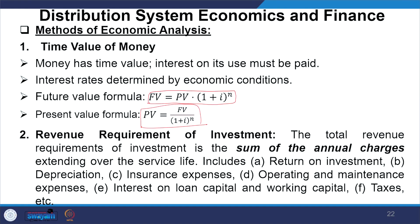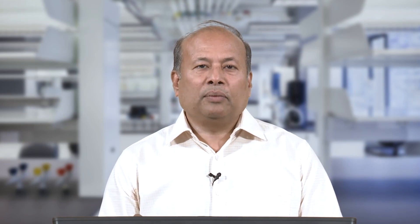The total revenue requirement of an investment is the sum of annual charges over the service life: return on investment, depreciation cost, insurance expenses, operating and maintenance expenses, interest on loan capital and working capital, taxes and other costs. Calculate the sum of present values of revenue requirements for each alternative — the most economical alternative has the minimum present value of revenue requirement.